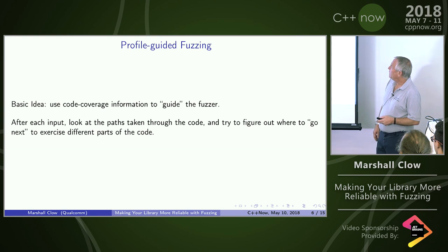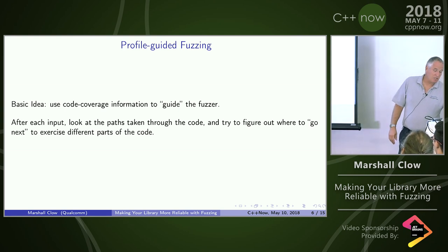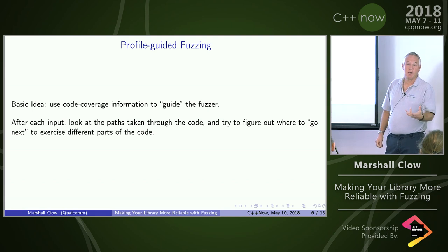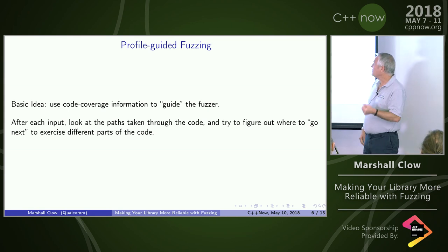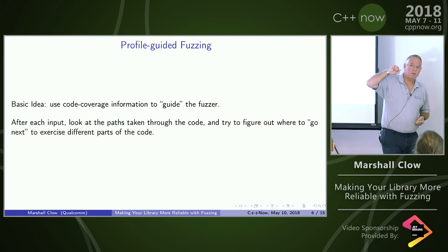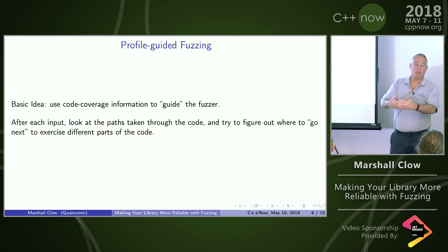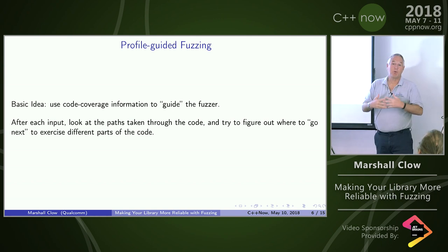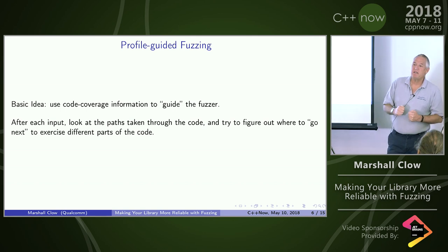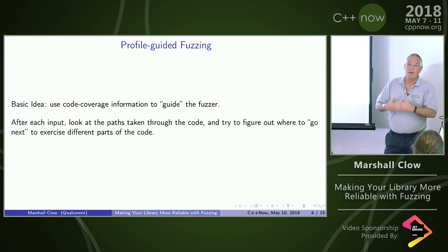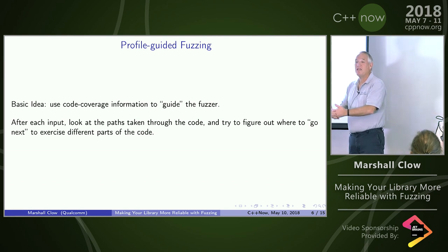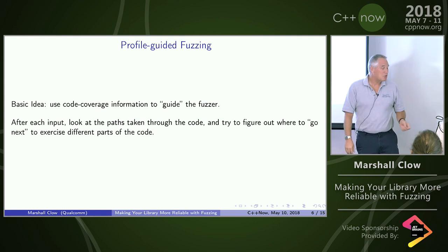So people came up with the idea of guided fuzzing, and in particular the one that seems to have caught on is profile-guided fuzzing. You build your test program with code coverage hooks that gcov and similar tools can read. After each input, the fuzzer looks at these code coverage results and uses them to figure out how to permute the input for the next test case. If you let it run long enough, it will eventually figure out how to exercise all of the reachable code paths in your code, giving you confidence that you don't have any really strange behaviors.